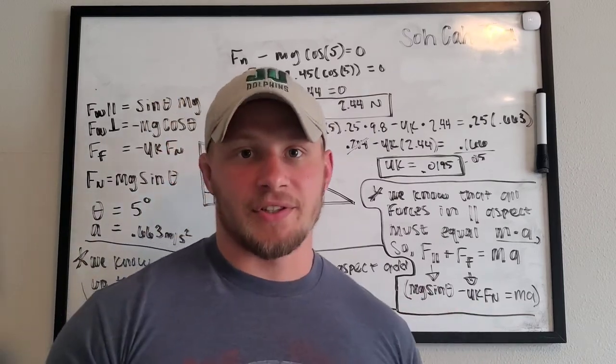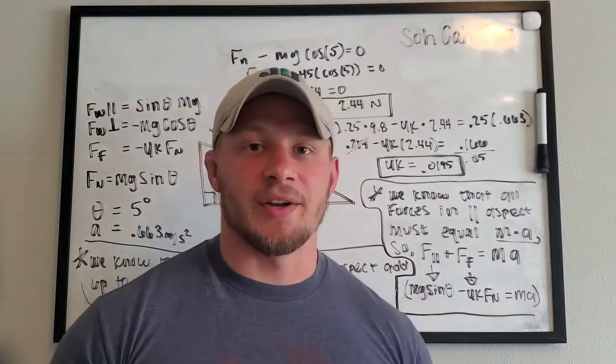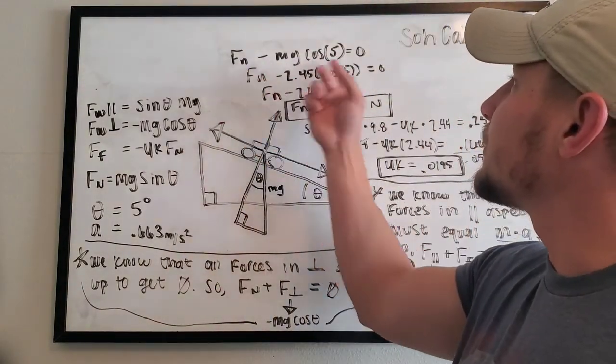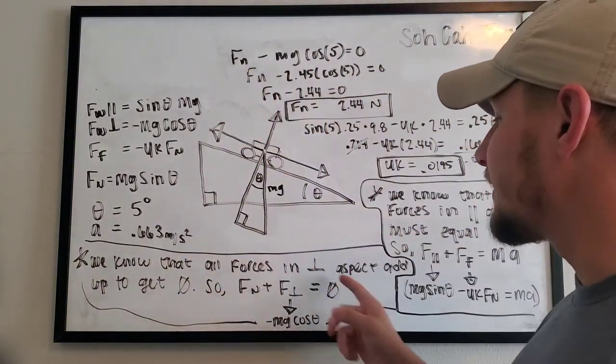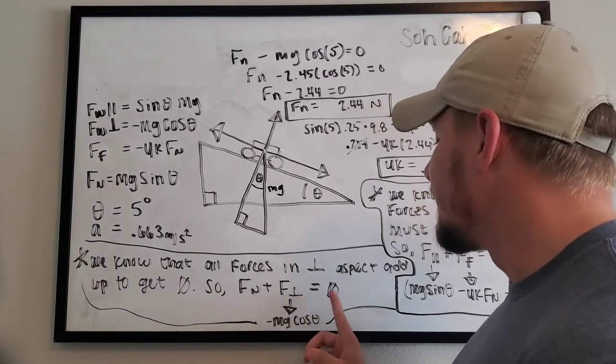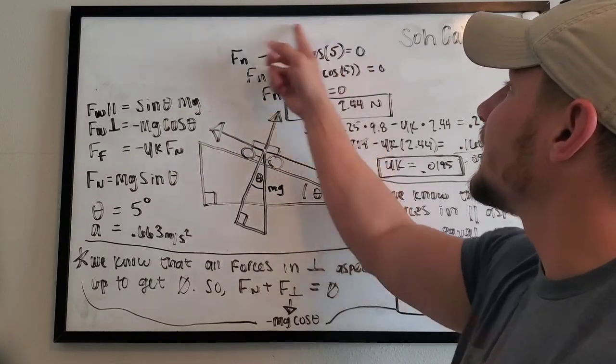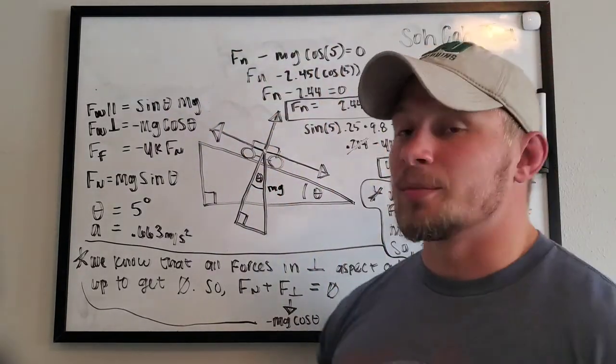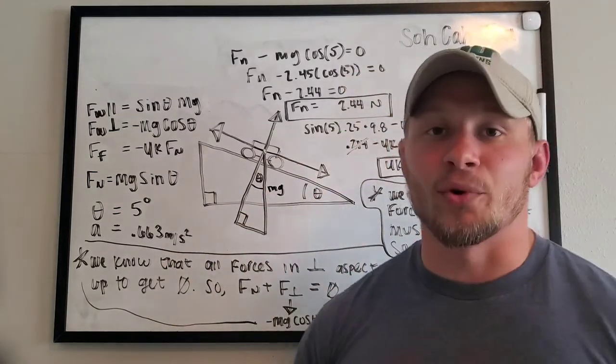Let's find the normal force. Normal force, we can use this equation here, which we already talked about down here. We set the normal force plus the parallel, or the perpendicular force, sorry, equal to zero. And that's exactly what I did here. So just a little algebra, if we find the normal force to be 2.44 newtons.